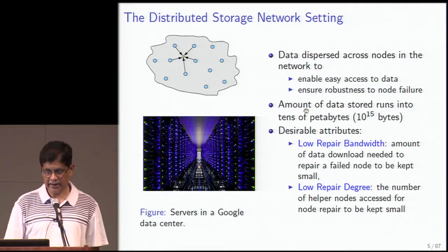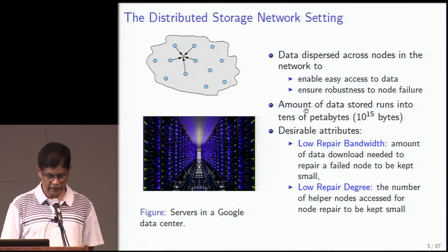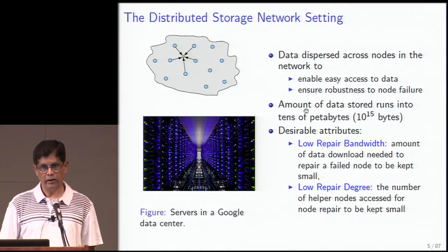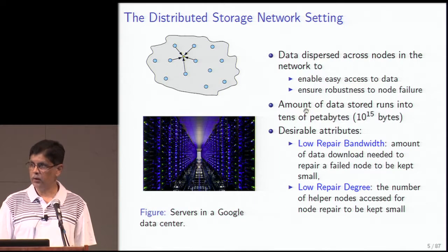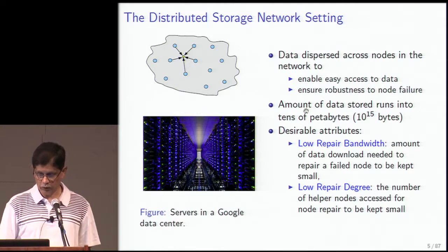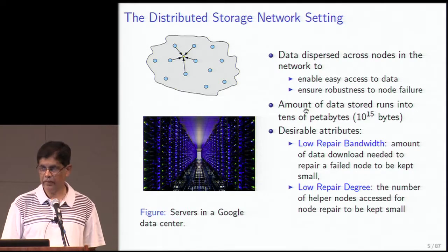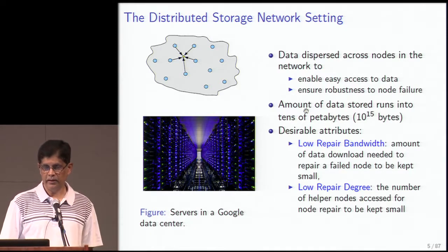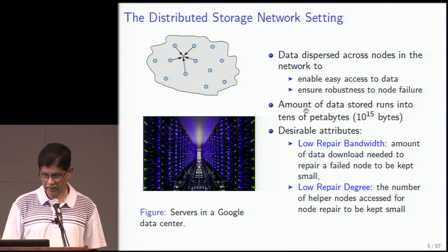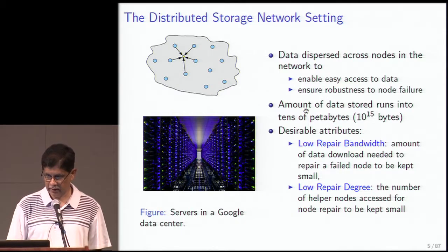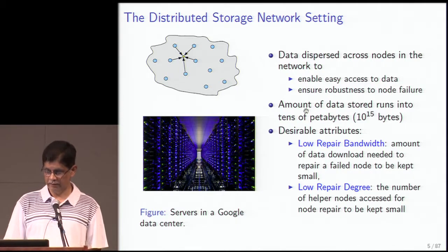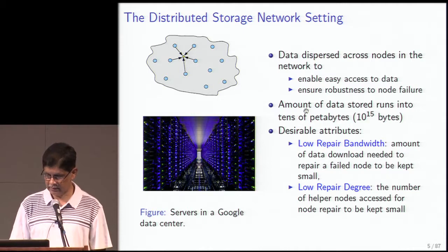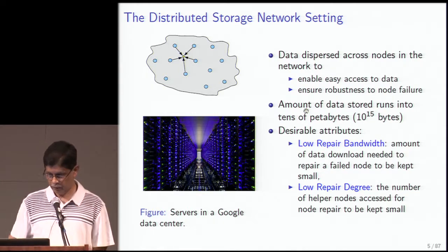The distributed storage network setting is one in which data is dispersed across nodes in the network, primarily to enable easy access to data but also to enable robustness to node failure. The amount of data stored is huge, running to several tens of petabytes. The desirable attributes we'll focus on are low repair bandwidth — the amount of data download needed to repair a failed node — and low repair degree — the number of helper nodes accessed for node repair.